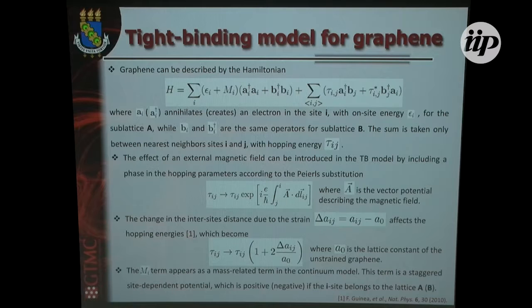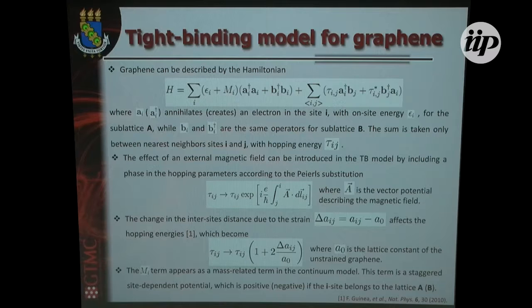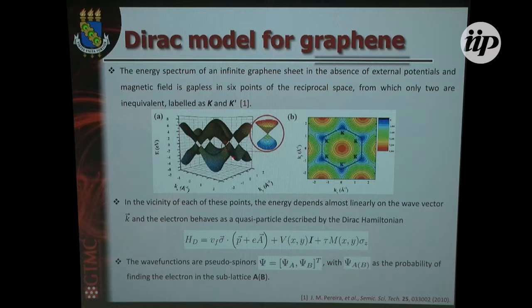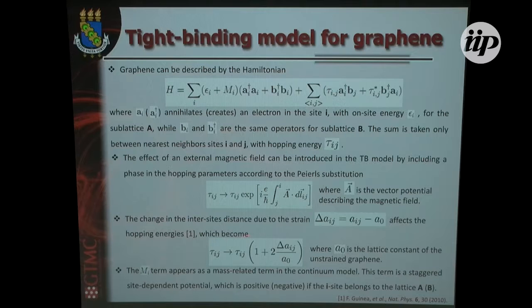Applying a magnetic field in this model is similar to a hopping transformation described by a Peierls substitution, given by where this A is the vector potential. In a similar way, if you apply strain, you have a lattice deformation, the distances between atoms change, and the hopping energy should also change. So applying strain in graphene — in bilayer graphene, trilayer graphene — is similar to changing the hopping energy.